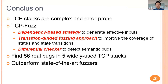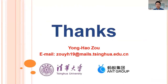In conclusion, TCP stacks are complex and error-prone, and they are hard to test. We developed a novel fuzzing framework named TCP Fuzzing to effectively test TCP stacks and detect bugs. It uses three key techniques: a dependency-based strategy to generate effective test cases, a transition-guided fuzzing approach to improve the coverage of state transitions, and a differential checker to detect semantic bugs. We evaluated TCP Fuzzing on five widely-used TCP stacks and found 56 real bugs. TCP Fuzzing outperforms existing fuzzing approaches. Thank you for listening — if you have any questions, please contact us.